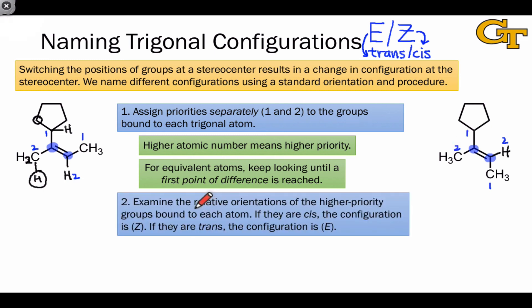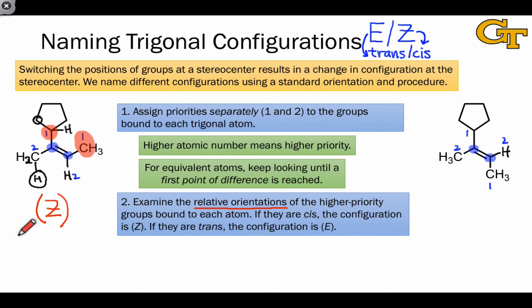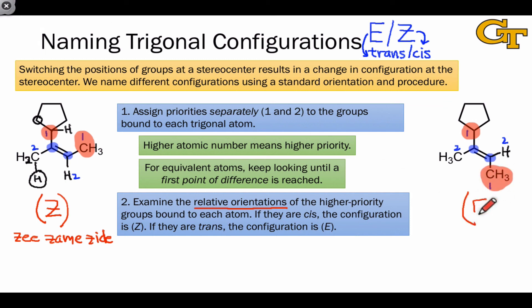Once we've made these prioritizations, we examine the relative orientations of the higher priority groups in a trans-cis sense. If the higher priority groups are cis, as in the structure on the left, we refer to the configuration as Z. One easy way to remember this is that in the Z configuration, the higher priority groups are on the same side of the double bond. If the higher priority groups are in a trans relationship, as in the right-hand molecule, we refer to the configuration as E. The origins of these terms come from German: E stands for entgegen, meaning apart, and Z stands for zusammen, meaning together.